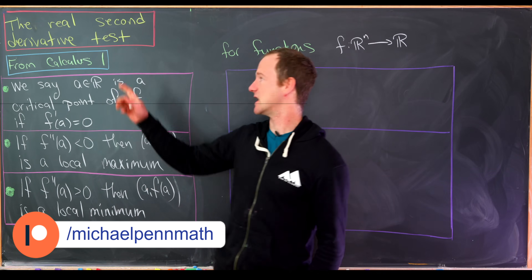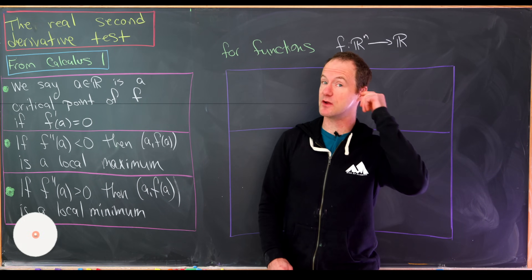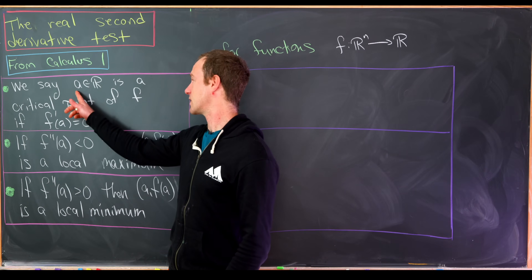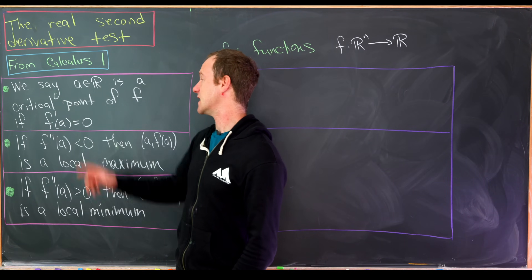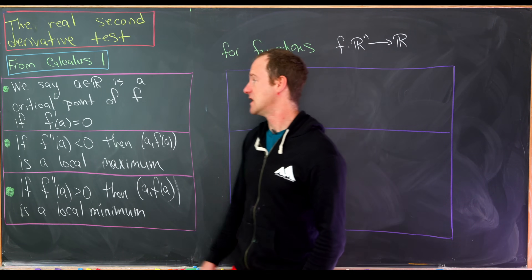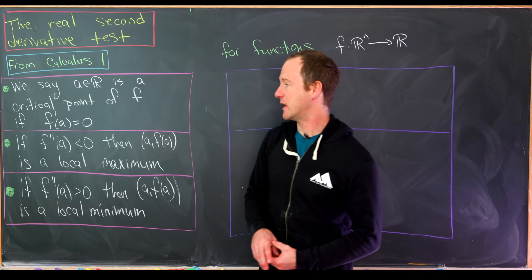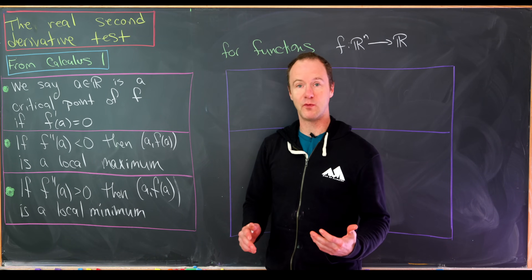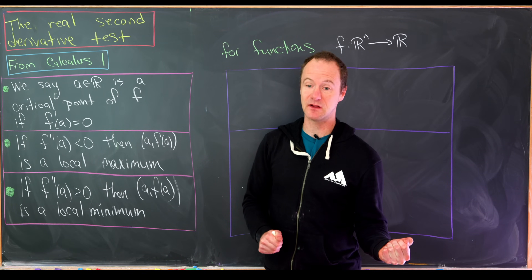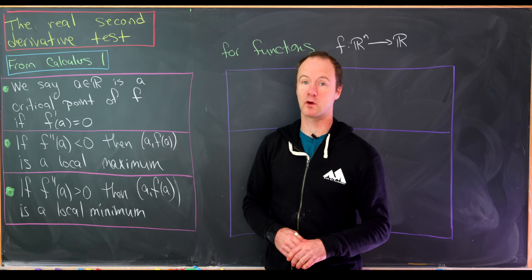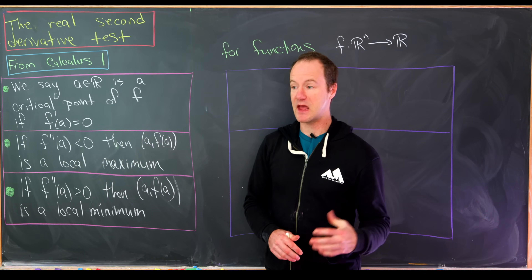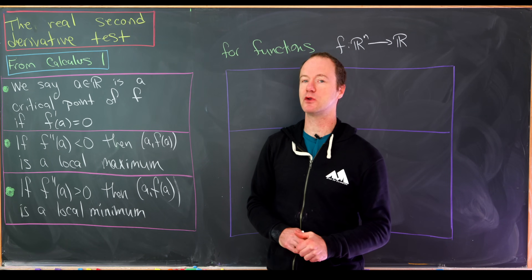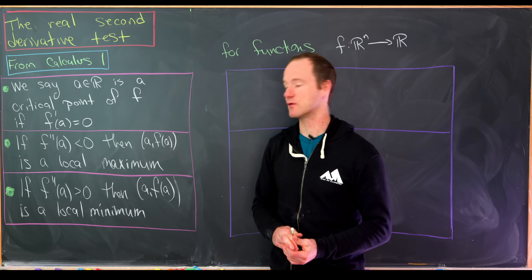From Calculus 1, or a single variable differential calculus class, we say that a real number a is a critical point of a function f if f prime evaluated at a equals zero. Critical points give you the possibility of having a maximum or a minimum, and to test which, you employ something called the second derivative test.